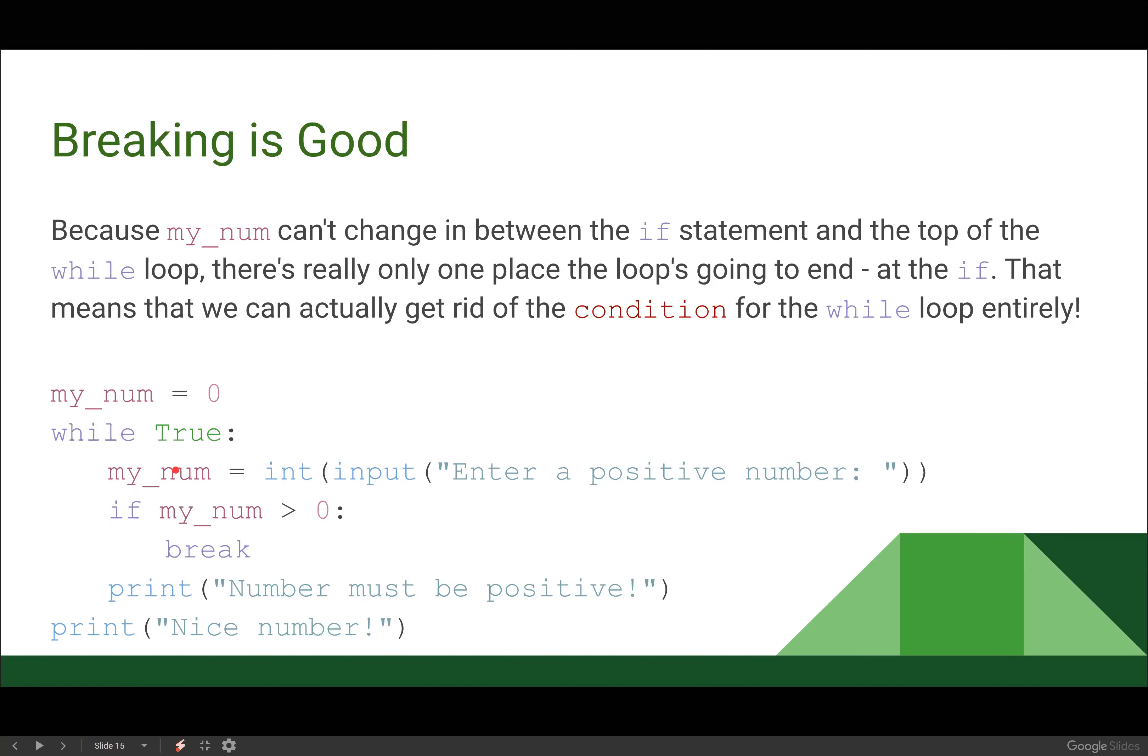So the reason that this doesn't go infinite, this isn't an infinite loop, is because we still have a place within our program, or within our loop, where the loop can be exited. There is still a way for us to stop looping here. So my_num is changing each time through the loop, and we have a condition in which we're going to break, which is going to stop the loop. So we have a way to end our loop. It will finish.